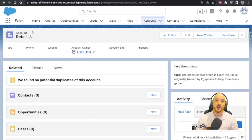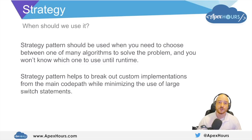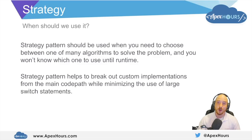That is what we mean by the strategy pattern — we want to choose some algorithm that's going to fetch us a fact about an animal, but we don't know which algorithm we want until runtime. If we're viewing a retail account we want facts about dogs; if we're viewing a wholesale account we want facts about cats. A question you might have is when should we actually use the strategy pattern? We want to use it when you need to choose between one of many algorithms to solve a problem and you don't know exactly which one to use until runtime. The strategy pattern is also there to help you break out your custom implementations from the main code path without utilizing multiple large switch statements. If you have a lot of large switch statements within your code, that might be a clue that you have an opportunity to use the strategy pattern to refactor your code and make it easier to understand and maintain in the long run.